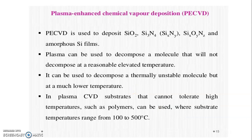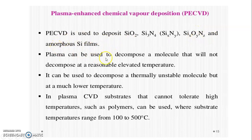Plasma-enhanced chemical vapor deposition (PECVD) is used to deposit silicon oxide, silicon nitride, and amorphous silicon films. Plasma can be used to decompose molecules that will not decompose at reasonably elevated temperatures. It can also decompose thermally unstable molecules but at a much lower temperature. Substrates that cannot tolerate high temperatures, such as plasma polymers, can be used, with substrate temperatures ranging from 100°C up to 500°C.